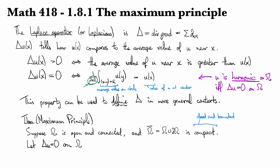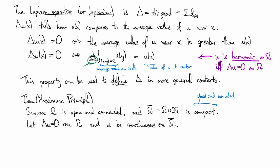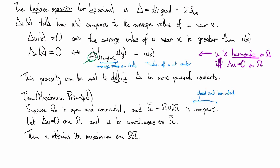Then if we have a solution to Laplace's equation on omega and u is continuous to the boundary, then u attains its maximum on the boundary. If u is continuous on the closure of the set, then there's a deep theorem that says it will attain its maximum somewhere on that set.